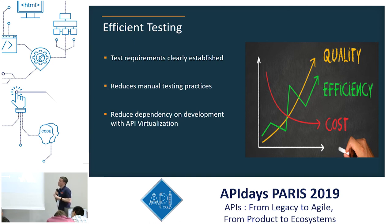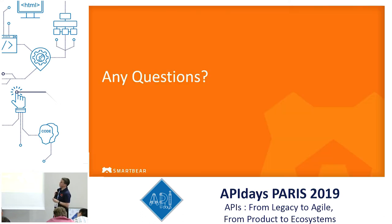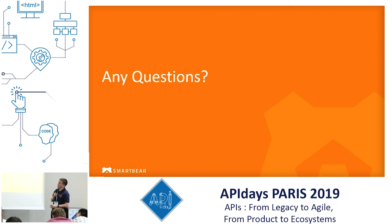Those are the main areas: creating and establishing solid requirements, and being able to test your APIs more efficiently. It's a high-level run-through of contract testing for your APIs — establishing requirements, virtualizing your APIs, and running functional tests against those.